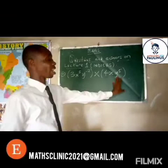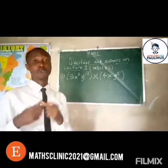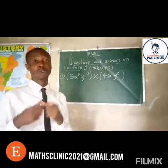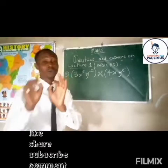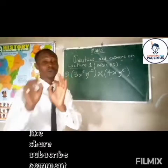We have a value here multiplied by another value here. If you have a question like this and you have to use the first law to solve it, what do you do? Basically, number one is to arrange the terms — take numbers to numbers, take alphabet to alphabet. In this case I'm going to take three to four, x to x, and y to y.